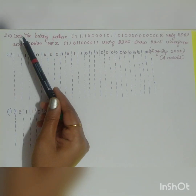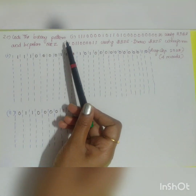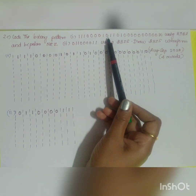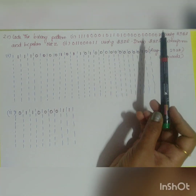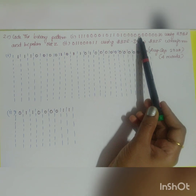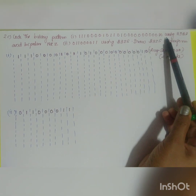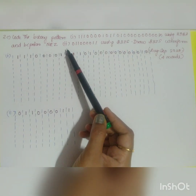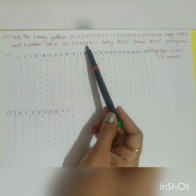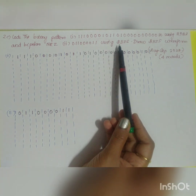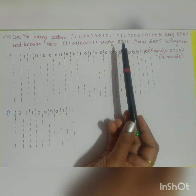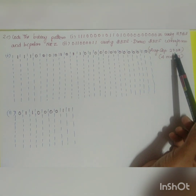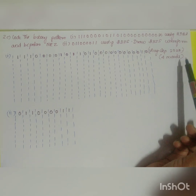The next question is the second question, part C. Code the binary pattern. First option: 1110000101101, then 001010 using HDB3 and bipolar non-return to zero. Second one: 011000011 using B3ZS. Draw the B3ZS waveform. This is asked from August/September 2020 for 4 marks.